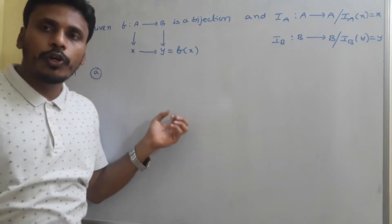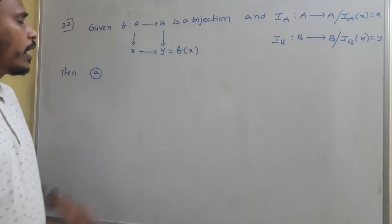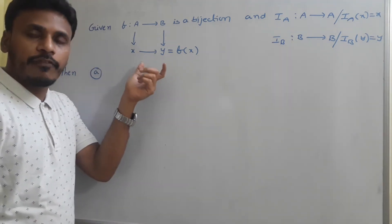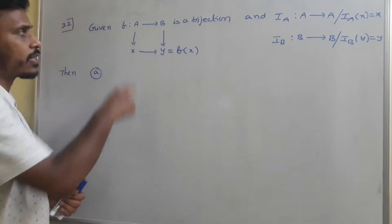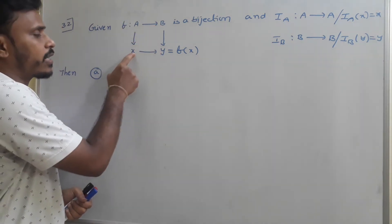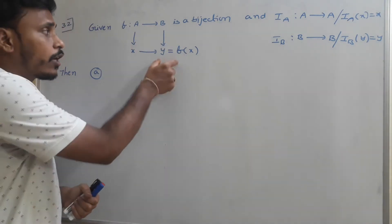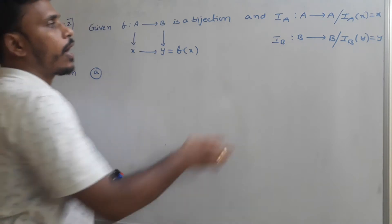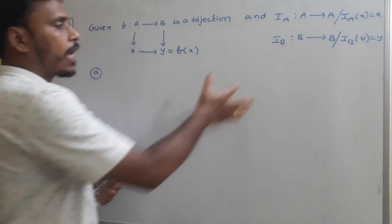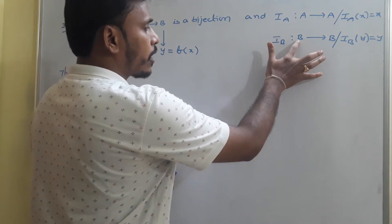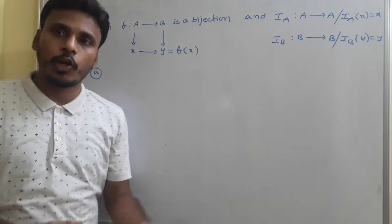In point 3.2, I am going to give you different statements related to the functions — different laws, you may say. For that, initially we need a function f which is a bijection also. That f connects set A to set B such that x connects to y, where y equals f(x). This y = f(x) is the rule. And iA is the identity function — it connects x to x. iB is the identity function on set B — it connects y to y, because y is an element of B and x is an element of A.